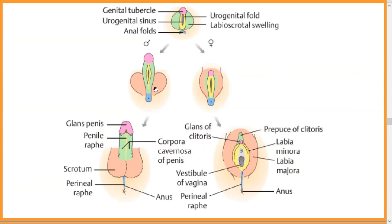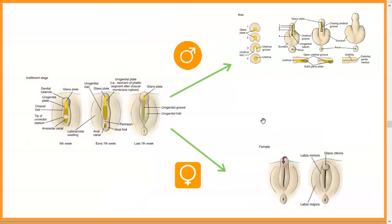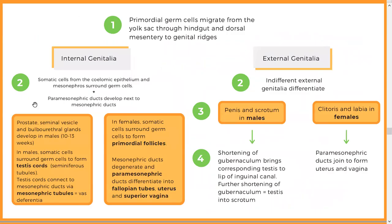In males, the structures elongate and this area closes. In females it doesn't elongate. For internal genitalia: somatic cells around the coelomic epithelium and mesonephric tubules surround germ cells. The paramesonephric ducts develop near the mesonephric ducts. Prostate, seminal vesicles, and other structures develop in males. Somatic cells form the testis cords and seminiferous tubules.